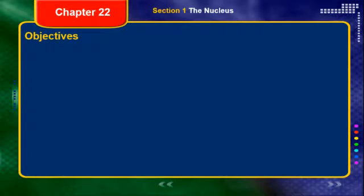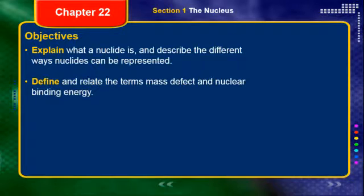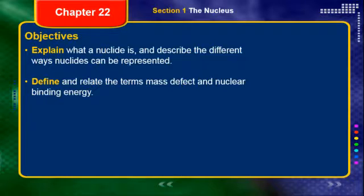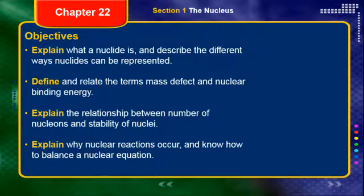Specifically in this section, we're going to talk about the nucleus itself. There are two things I want you to be able to do by the end of this PowerPoint presentation. First, explain what a nuclide is and describe the different ways nuclides can be represented — something we went over in Chapter 3, so it won't be brand new. Second, define and relate the terms mass defect and nuclear binding energy. These are two brand new terms. The remaining objectives will be covered in the next video lecture.